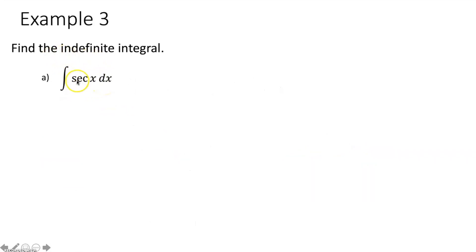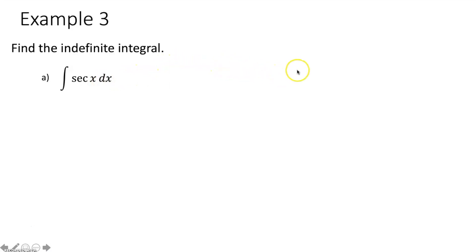Example three: find the indefinite integral of secant of x dx. This is one of your six basic trig functions, so ideally this is done in three seconds: the integral of sec x dx equals natural log of |sec x + tan x| plus c. But let's say you don't remember — let me show you why this is the answer.